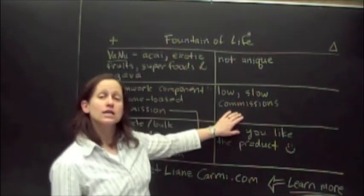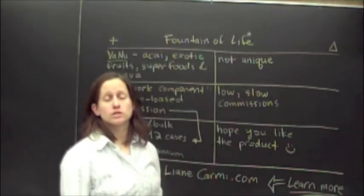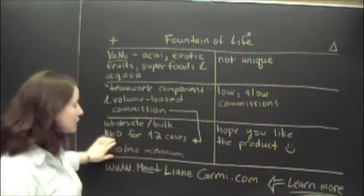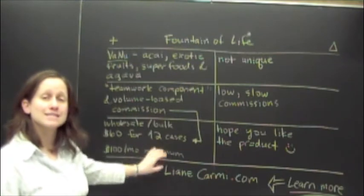And that's the next point is it's low, slow commissions for all the work that it's going to take. If you just imagine, if you want to make $60, you've got to sell 12 cases.